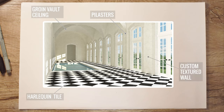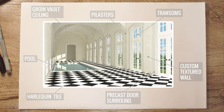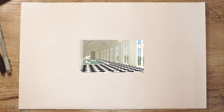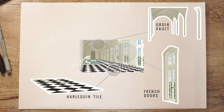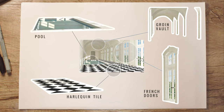The walls and ceiling are going to be a custom textured surface — sort of a concrete look but lighter. We have transoms above the doors, precast surrounding the French door, and then the actual French door itself. The main elements of this design are the groin vault, French doors, harlequin tile, and the pool — these are the main features that come together to create this space.